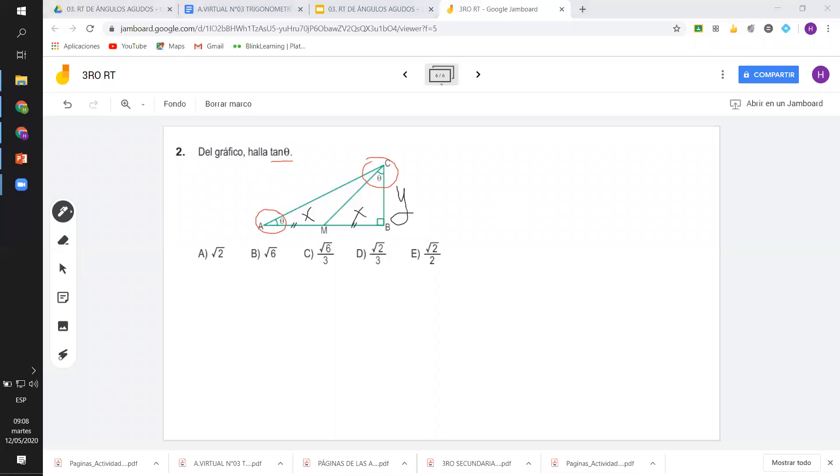¿Qué cosa es tangente de teta? Cateto opuesto sobre cateto adyacente. Muy bien, perfecto. Pero profesor, tengo dos tetas, ¿cuál de los dos hago? Los dos, ¿para qué? Para que después igual entre las dos. Por ejemplo, vamos a hacer del triángulo grande. Tangente de teta es cateto opuesto sobre cateto adyacente. ¿Cuál es el opuesto de este teta? Y. ¿Entre cuánto? Muy bien, 2X.